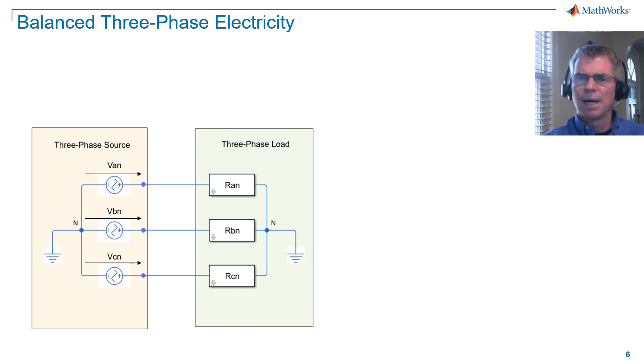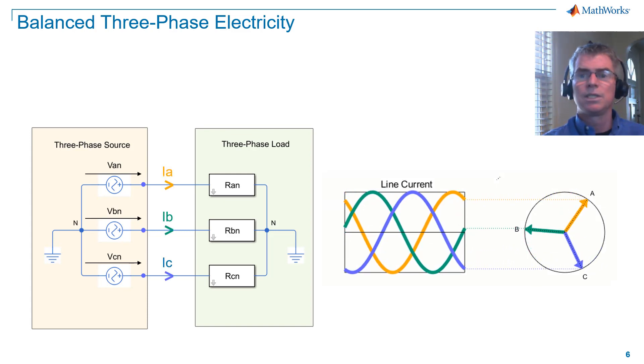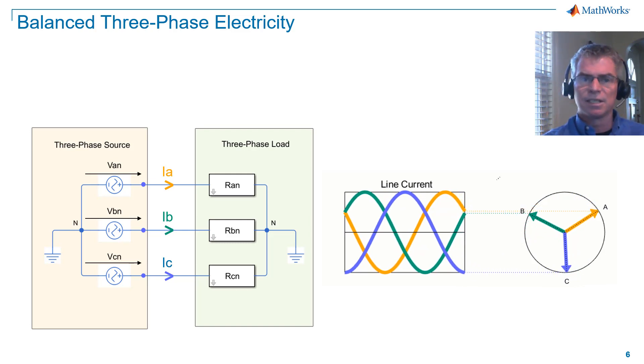Because the voltage supply is balanced and the resistors are equal, we have balanced three-phase line current. When both voltage and current are balanced, we say we have a balanced three-phase system.